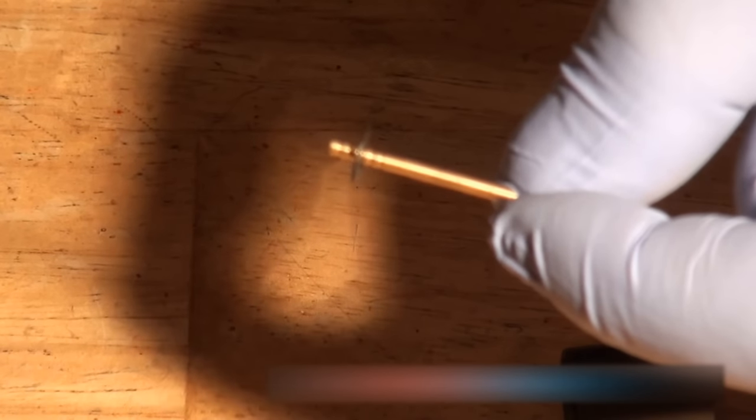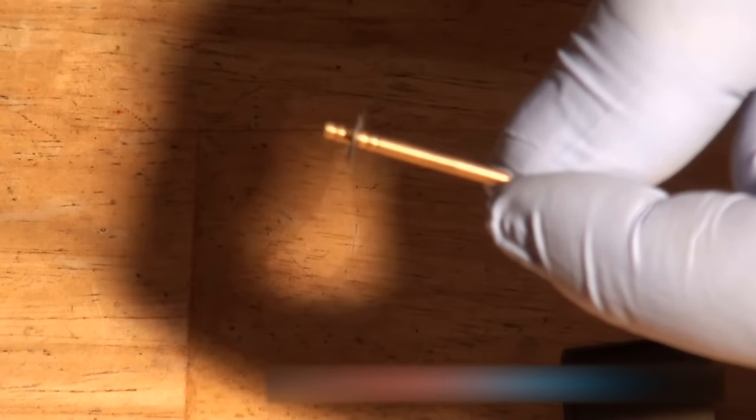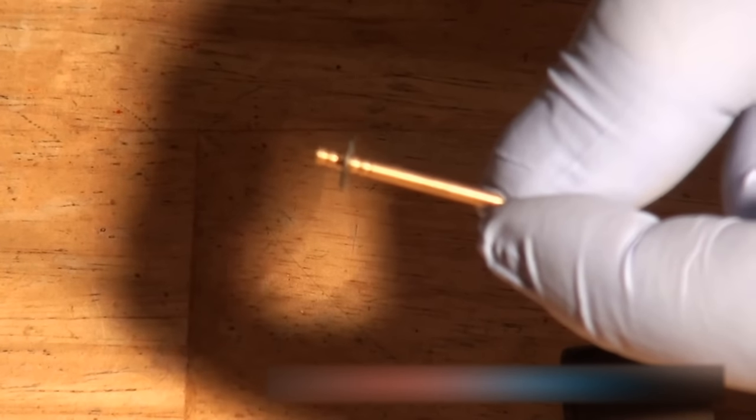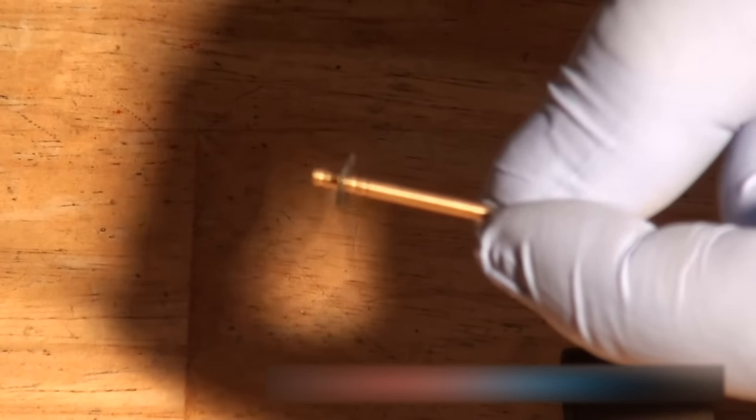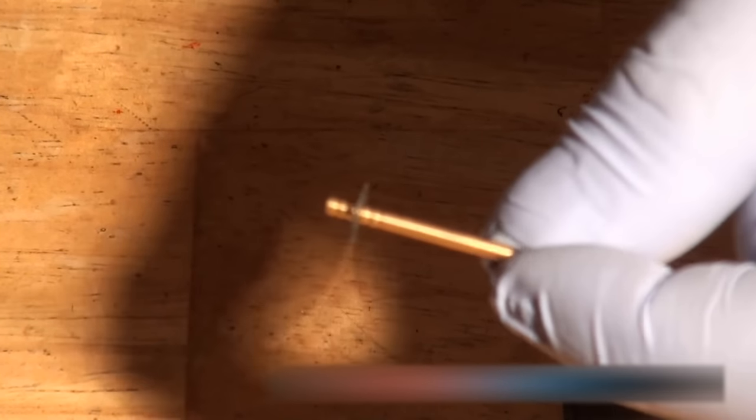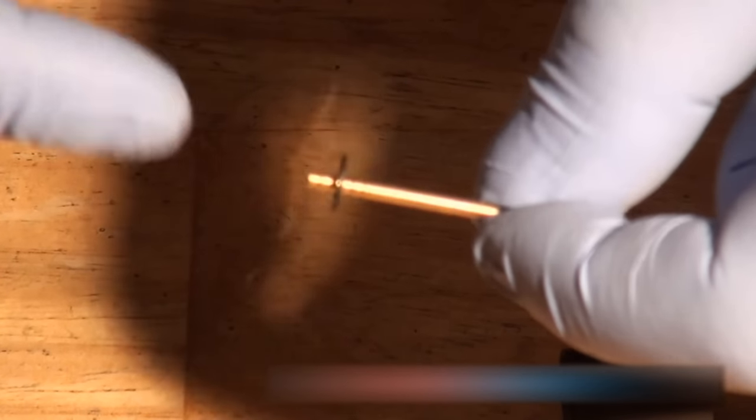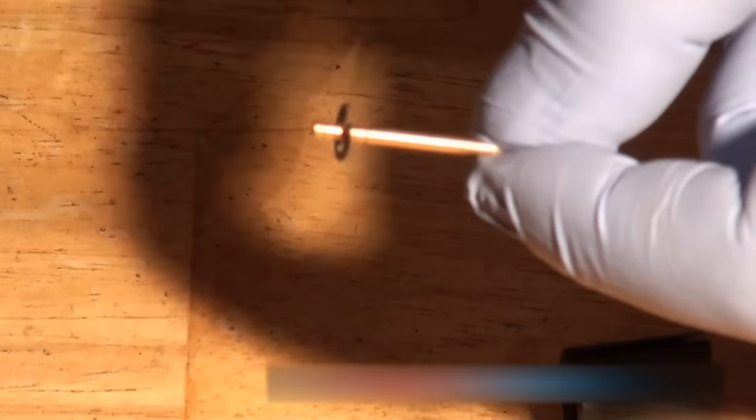The newer engines have five notches on the needle and the clip should be on the middle notch. The older engines have three notches on the needle and again you want to get the clip here on the middle notch. You can easily pull this off with some pliers and press it back into place.